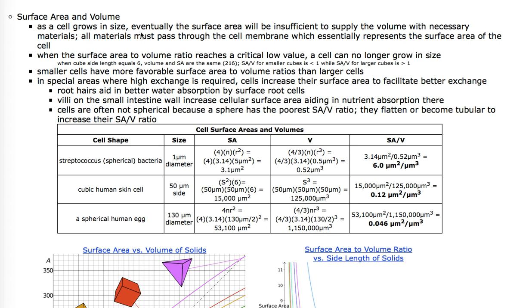Since all materials have to pass through the cell membrane to get into the inside of the cell, the surface area of the cell membrane is important. When the surface area to volume ratio reaches a critical low value, a cell can no longer grow in size. Smaller cells have a more favorable SA to V ratio than larger cells. In special areas where high exchange is required, cells increase their surface area to facilitate better exchange.